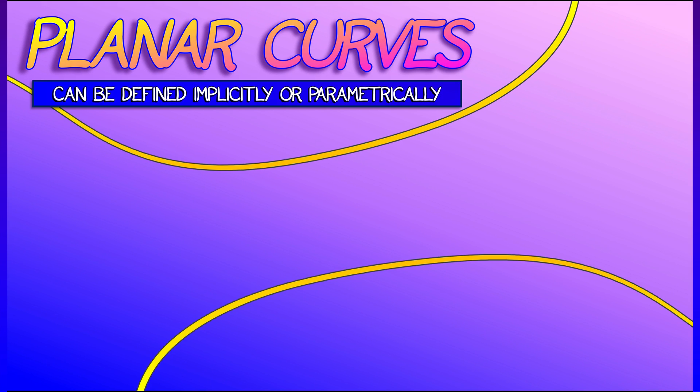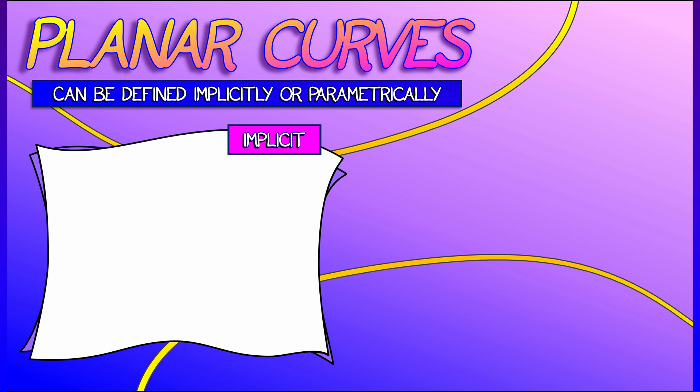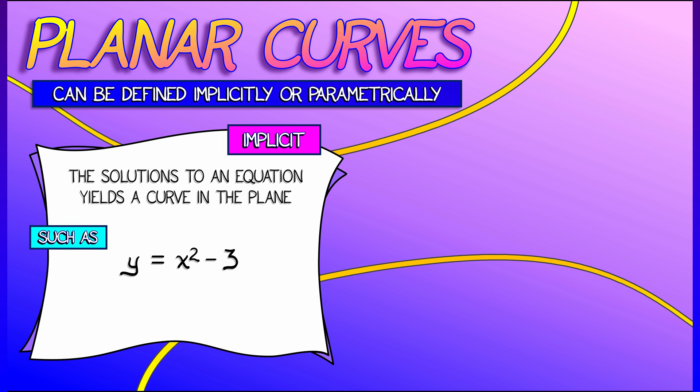Curves can be defined implicitly or parametrically. An implicit formulation of a curve represents it as the set of solutions to some equation. So let's say y equals x squared minus 3.